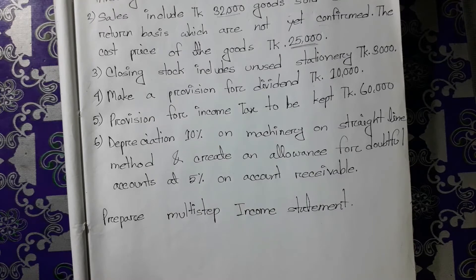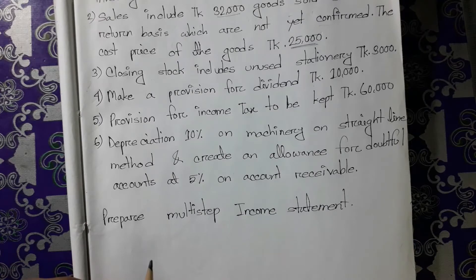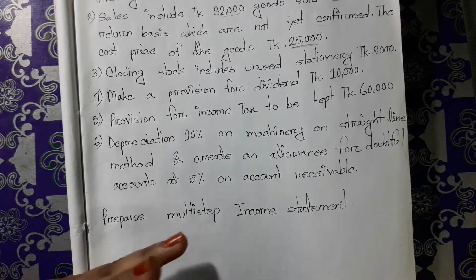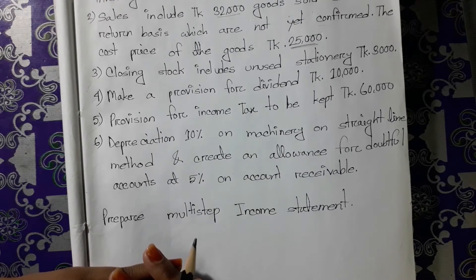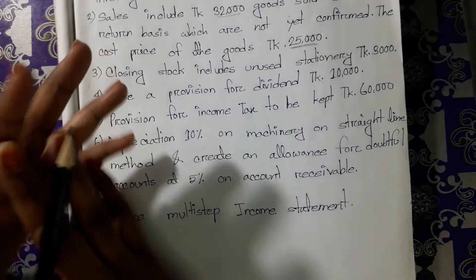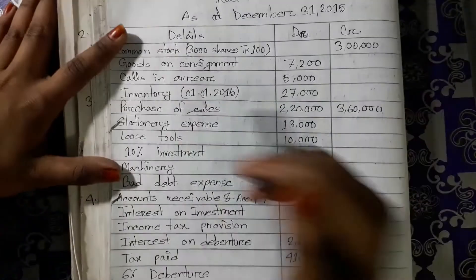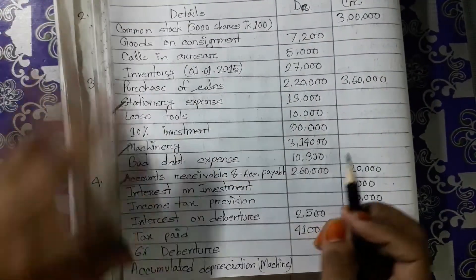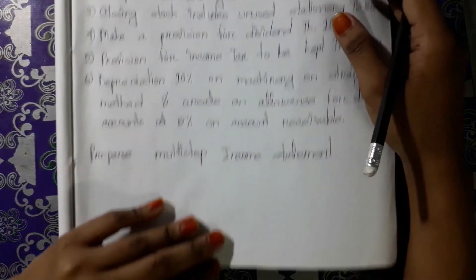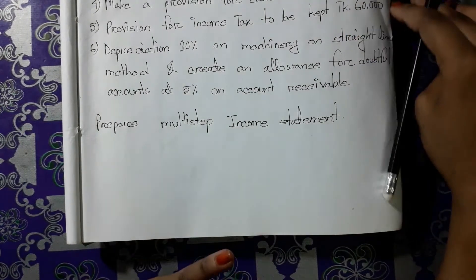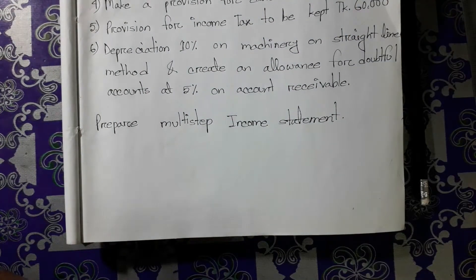Depreciation is 10% on machinery using the straight line method. We also need to create an allowance for bad debt at 5% on accounts receivable. We have to account for accounts receivable.